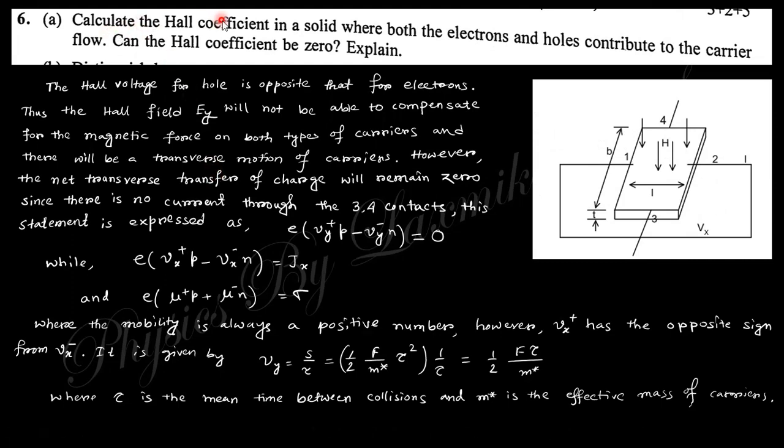Question number six: Calculate the Hall coefficient in a solid where both electrons and holes contribute to the carrier. That means it's a semiconductor. Within the semiconductor, you can see along the three-fourths direction there is no current flow. Only current flows along that direction, and charges are separated along that direction. Along this three-fourth direction, the charges are separated by holes and electrons which cancel out each other.